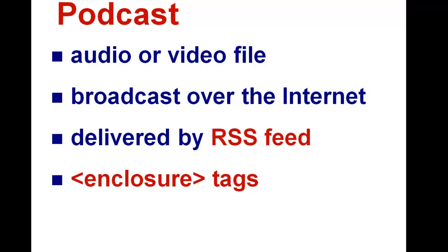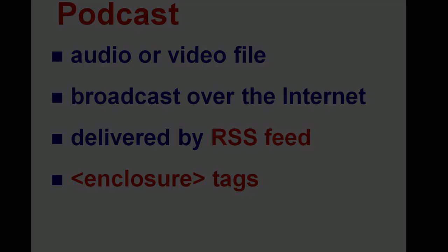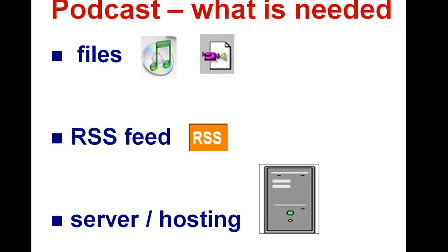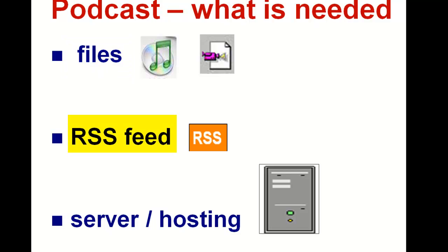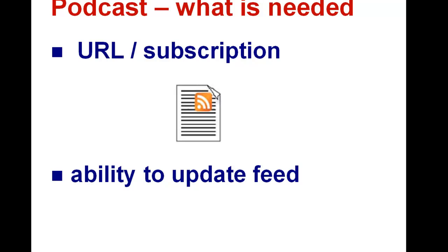The difference between the podcast feed and our typical blog feeds is that the podcast feed contains an enclosure tag. In order to produce a podcast, you need to have an audio or video file, you need to have an RSS feed, and you also need a place to host your audio or video files. You will need the URL of your feed so that people can subscribe to it, and you will need a mechanism to have that feed updated.